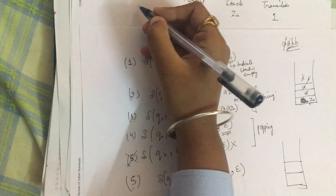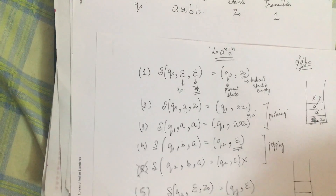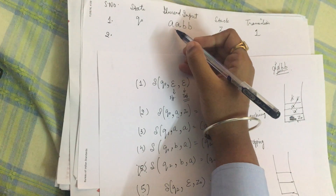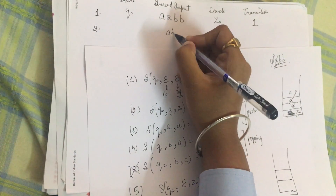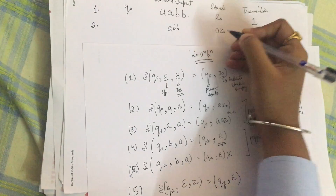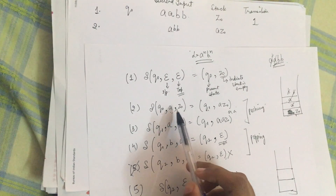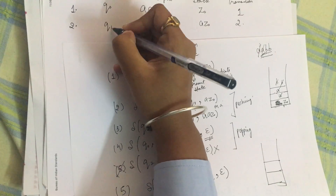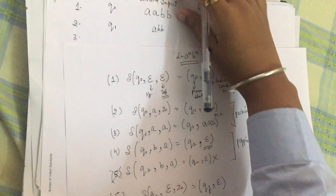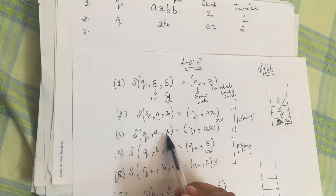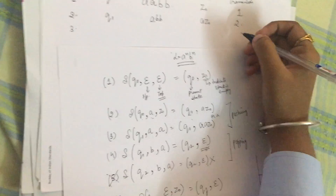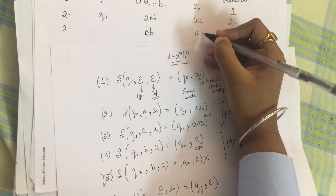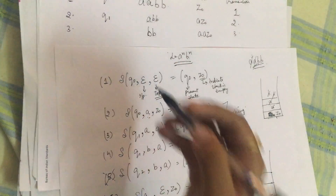For row two: we take one 'a' and push it into the stack, so the unread input becomes 'abb' and the stack has 'a z naught' — using transition two, state q1. For row three: the top of the stack has 'a' and the input symbol is also 'a', so transition three is used; the unread input is 'bb', the stack is 'a a z naught', and the state is again q1.